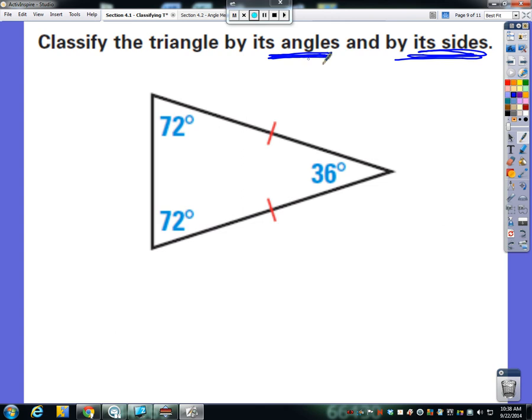If we start with angles, here are all three angles. All three of these angles are less than 90 degrees, so they're all acute. Are they all the same? No, they're not all the same. These two are the same, but the 36 is different. So this is an acute triangle based on its angle measures.